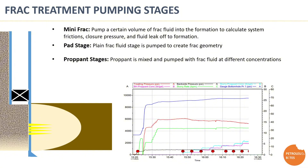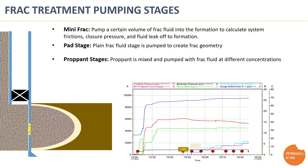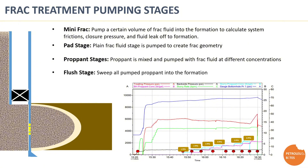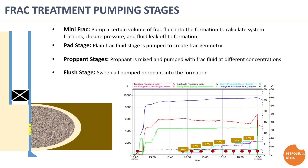The proppant slurry stages follow the pad stage. In this stage, proppant is mixed and pumped with the frack fluid. Proppant concentration is gradually increased until it reaches the maximum concentration value, just before starting the flush stage. The flush stage is the last stage of the main treatment pumping schedule — it's a fluid-only stage that sweeps all proppant from the frack string and places it in the created frack. After pumping the flush stage, the frack treatment is completed.